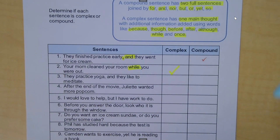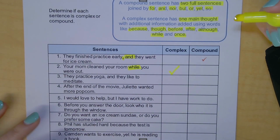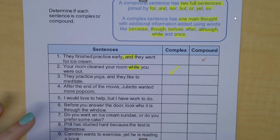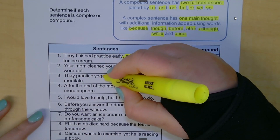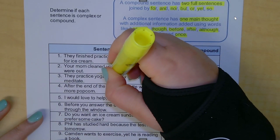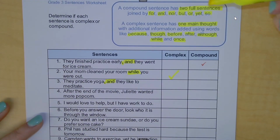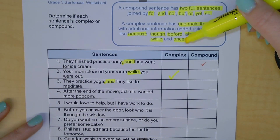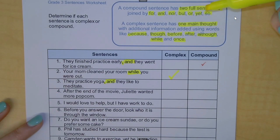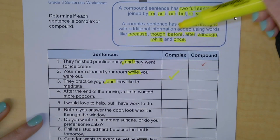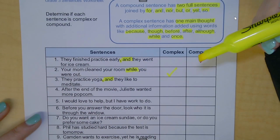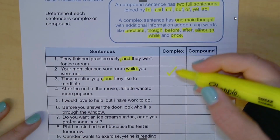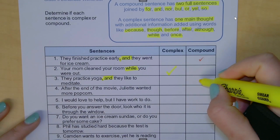Number three: 'They practice yoga, and they like to meditate.' There's a comma and the conjunction 'and.' Is 'and' a subordinating conjunction or a coordinating conjunction? 'And' is a coordinating conjunction, so 'they practice yoga and they like to meditate' is a compound sentence.